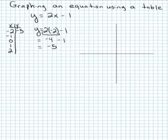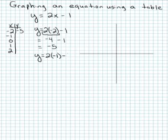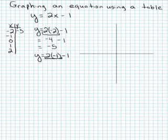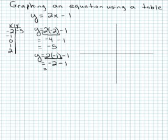Now I'm going to use the next x value, which is negative 1, and put that into the equation. Following order of operations, 2 times negative 1 is negative 2. And negative 2 minus 1 is negative 3.